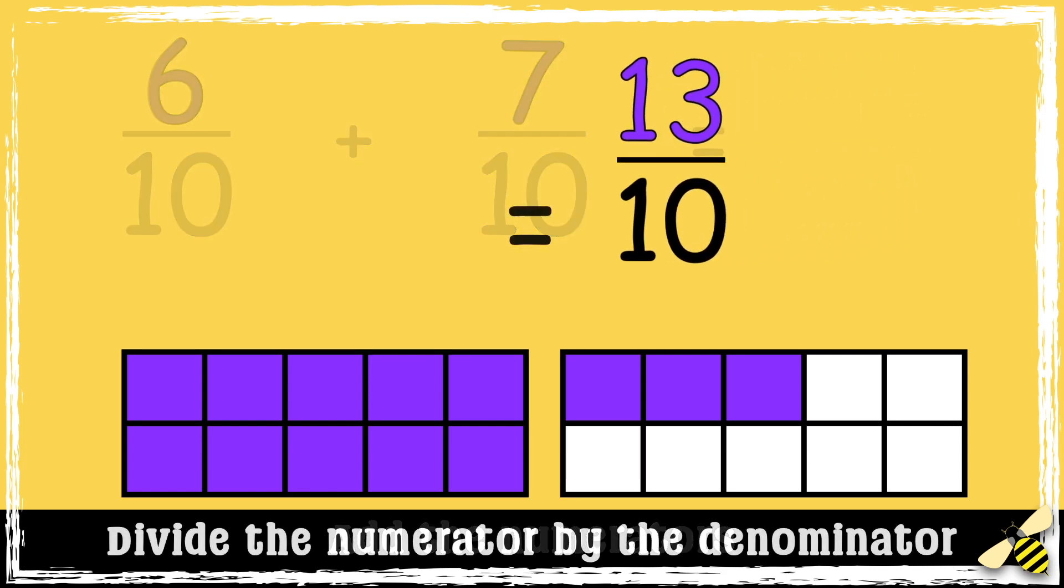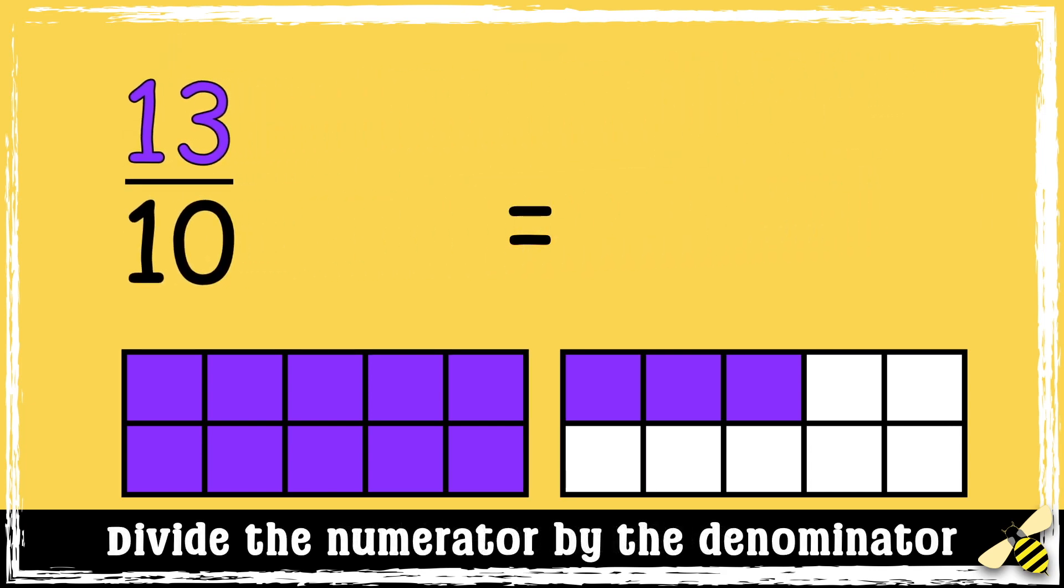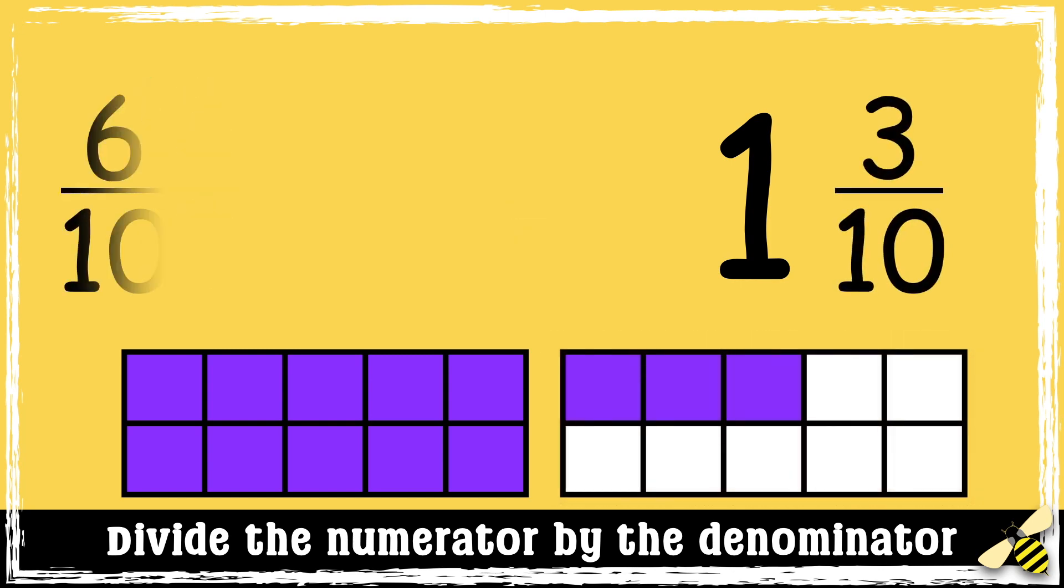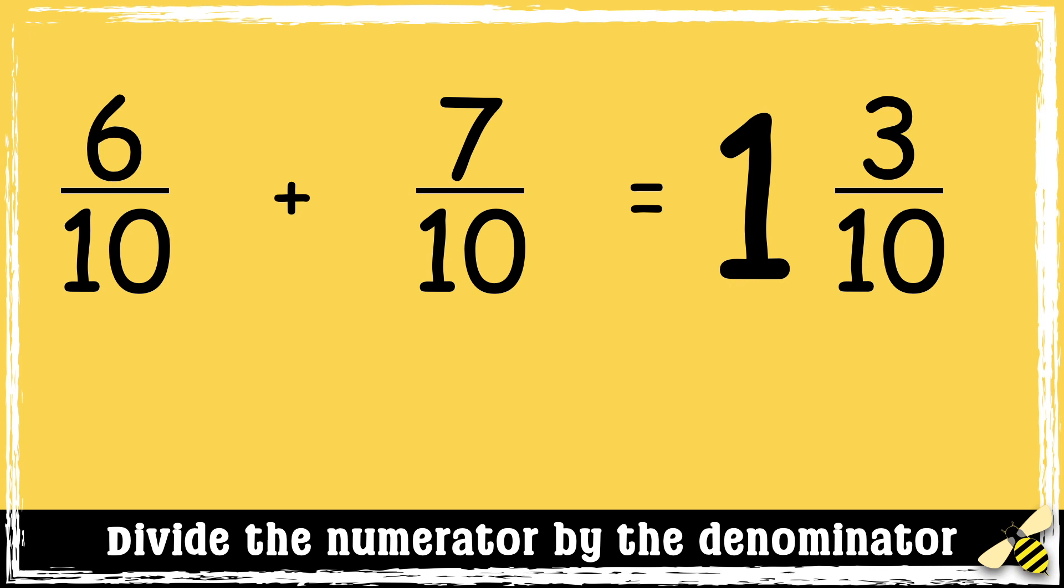We now have an improper fraction, so we need to convert it to a mixed number. So we have 1 whole and 3 tenths left over. So the answer is 1 and 3 tenths.